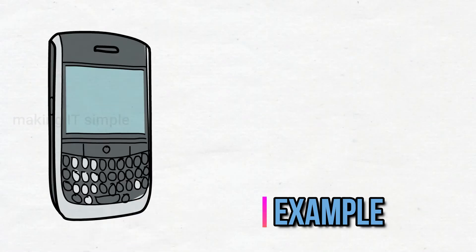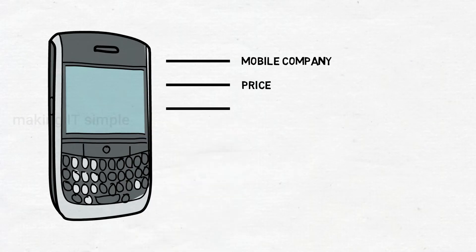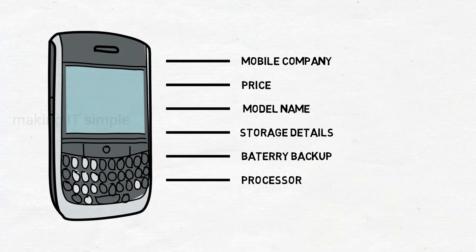Let us consider another example, say mobile. So company who built the mobile, price of the mobile, mobile model name, information about storage, battery backup, processor, etc. So this all is the data about the mobile.